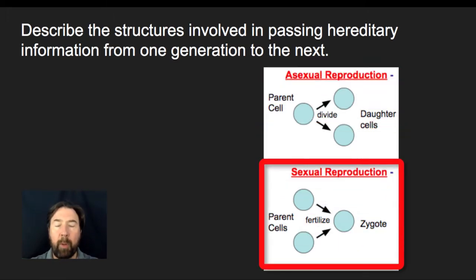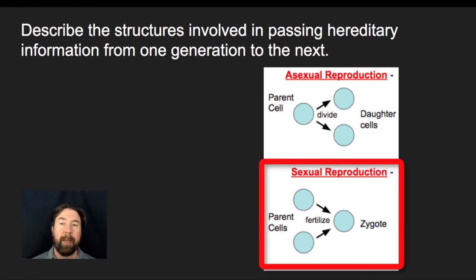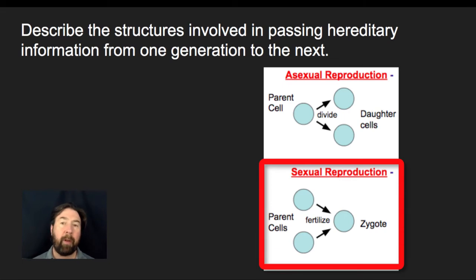In sexual reproduction, we have two separate parent cells. Those parent cells take their genetic material, make copies of it, but then divide it so they only pass on half of that genetic information — seen in the process of meiosis. That allows two cells, each with half the genetic information, to fuse together to form a zygote. This involves a lot more genetic variation, and the combining of DNA from two parents produces a genetically unique offspring through the process of fertilization.